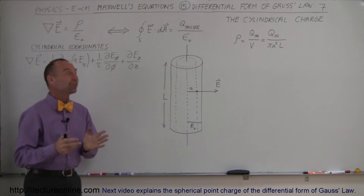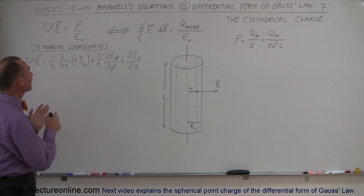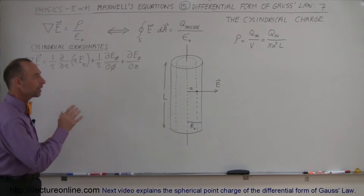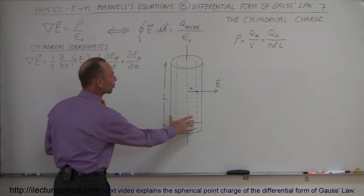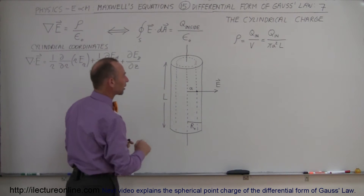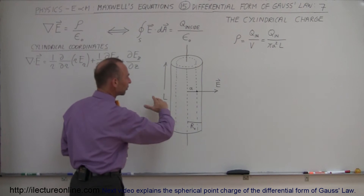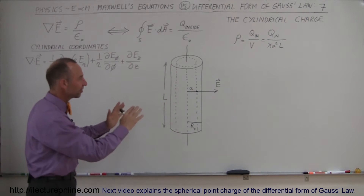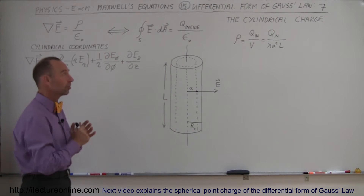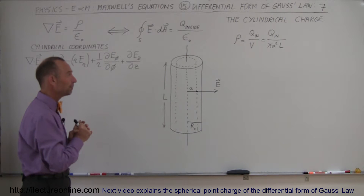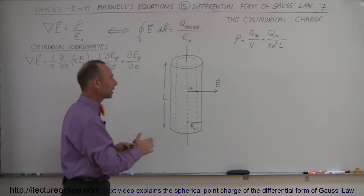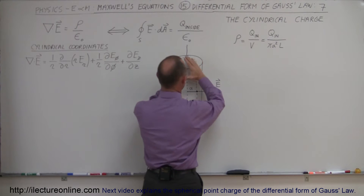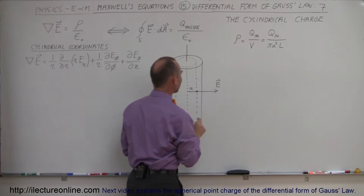Welcome to Electron Line. In order to understand the differential form of Gauss's Law a little bit better, we're going to do an example here of a cylindrical charge object. Assume that the cylinder is full of charge with equal distribution, therefore the charge density is the same everywhere. To express the charge density, we use the letter rho, which is equal to the charge inside divided by the volume.